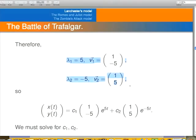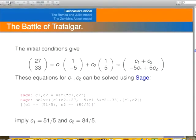And now we enter them into the equation that we had before for the solution to the differential equation. All we have to do is use the initial conditions to solve for c1 and c2. 27 was the initial number of ships on one side. That's equal to c1 plus c2. That's why plugging t equals 0 into the equation here.